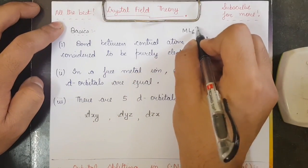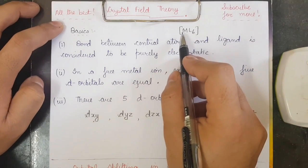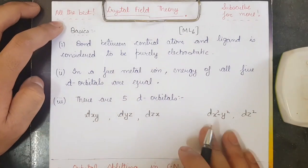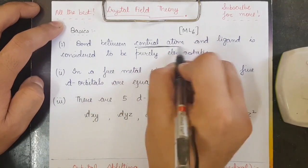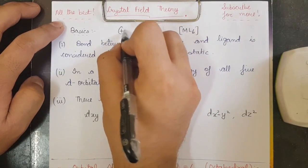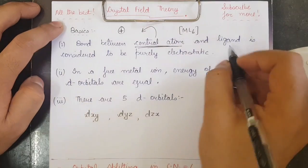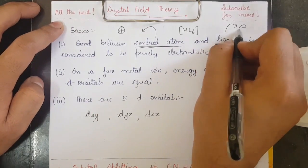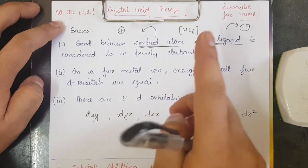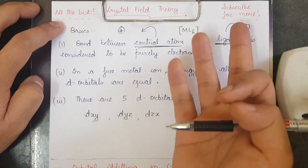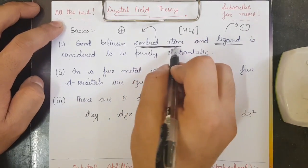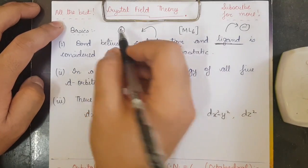The first basic: the bond between the central metal atom and the ligand in a complex like ML₆ is considered to be purely electrostatic. The metal is considered as a positive point charge and the ligand is considered as a negative point charge. Ligand is an electron donor, that is why it is considered to be a negatively charged species.